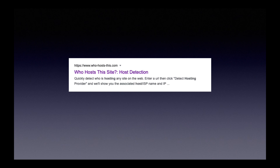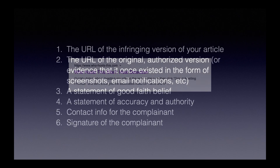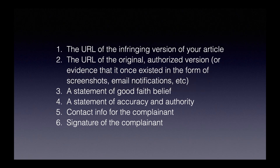Over the course of several emails, I sent them the six pieces of information that you need in a DMCA takedown notice: 1. The URL of the infringing version of your article. 2. The URL of the original, authorised version of your article, or evidence that it once existed in the form of screenshots, email notifications, etc. 3. A statement of good faith belief. 4. A statement of accuracy and authority. 5. Contact info for the complainant. 6. The signature of the complainant.